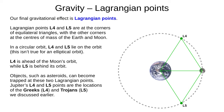L4 and L5 are at the corners of equilateral triangles, with the other corners at the centres of mass of the two bodies — Earth and the Moon in these examples. In a circular orbit, L4 and L5 lie on the orbit; it's slightly different in elliptical orbits. L4 is ahead of the Moon's orbit, while L5 is behind the orbit. Objects such as asteroids can become trapped at these two Lagrangian points. Jupiter's L4 and L5 points are the locations of the Greeks and Trojans we discussed earlier.